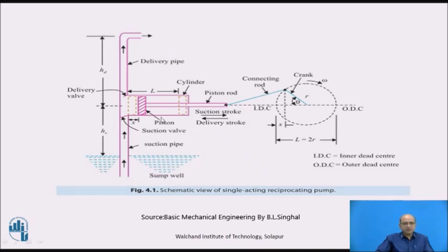In the IC engine, we have the cylinder, piston, valves, and cooling arrangement. Similarly, there is a cylinder and piston arrangement along with valves which are provided for the entry and exit of the working fluid. In this pump, the working fluid is water, which itself acts as a cooling agent. That is why it does not require a special cooling arrangement like IC engines.